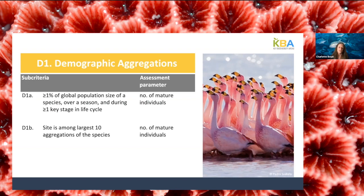We can apply D1a separately in the breeding range and feeding range of the same species if we have relevant data. For many species we don't have good information on global individual numbers, so sub-criterion D1b allows us to identify any one of the largest 10 aggregations for any species as a KBA, applied across all life history functions — we look for the 10 largest aggregations globally and don't apply D1b separately to breeding or feeding aggregations. We don't actually need to know why the species is aggregating at a particular site in order to identify that site under D1b.